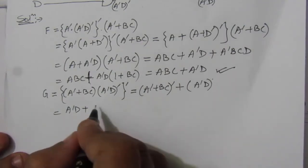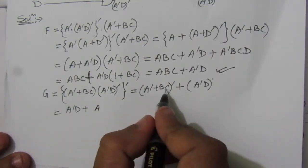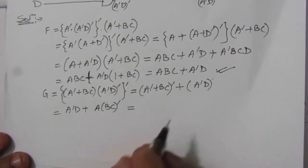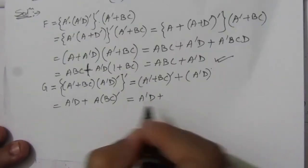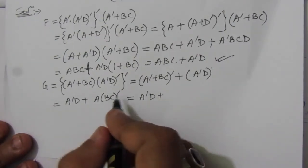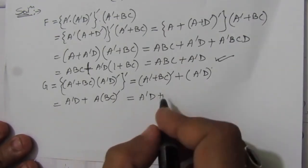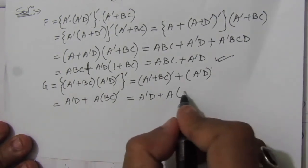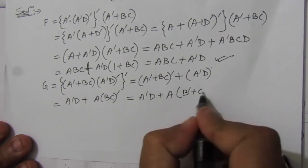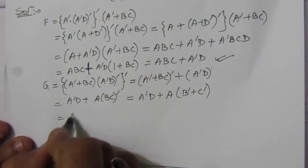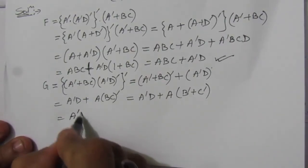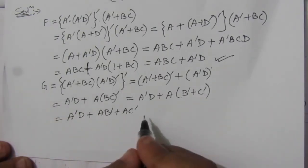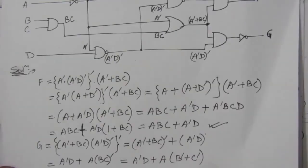Continuing: A · (B·C)-bar = A · (B-bar + C-bar). So we have A-bar·D + A·B-bar + A·C-bar. Expanding: A-bar·D + A·B-bar + A·C-bar. Therefore the simplified boolean expression for G is: G = A-bar·D + A·B-bar + A·C-bar.